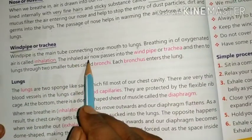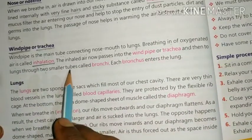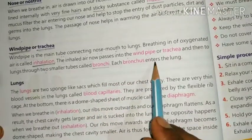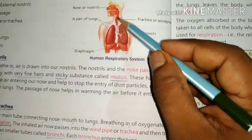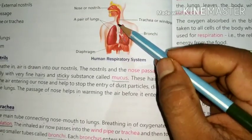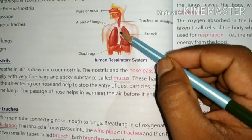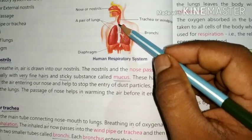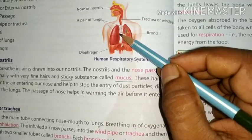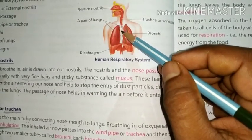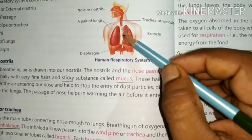The inhaled air passes into the windpipe or trachea and then to the lungs through two smaller tubes called bronchi. Each bronchus enters the lungs. Bronchi are smaller tubes connected with the trachea, that means windpipe, and the lungs.